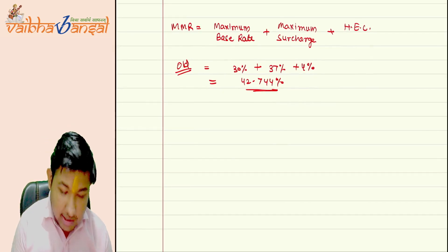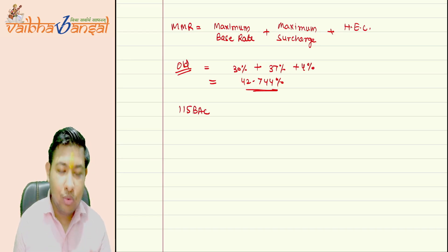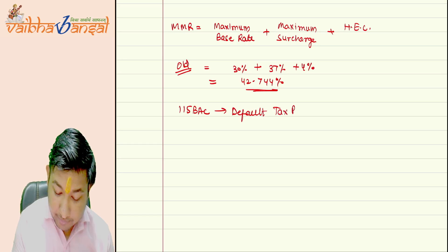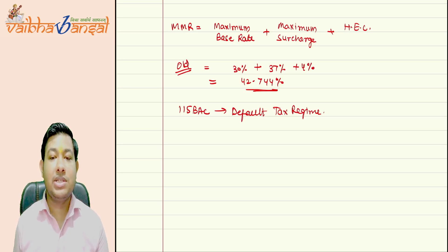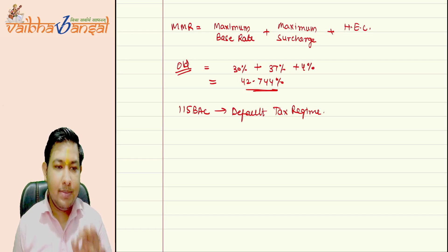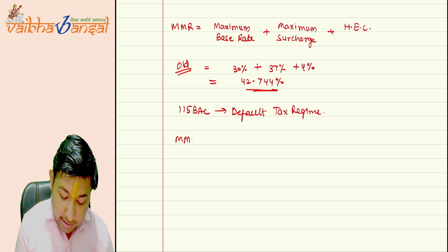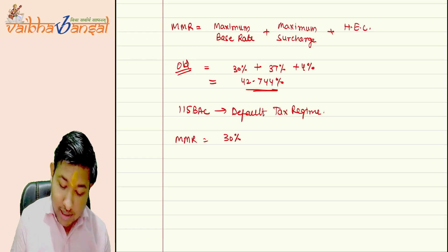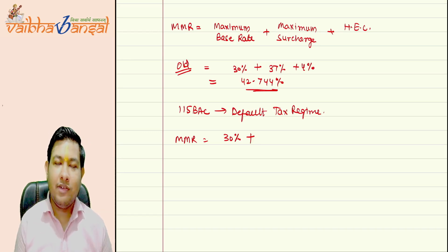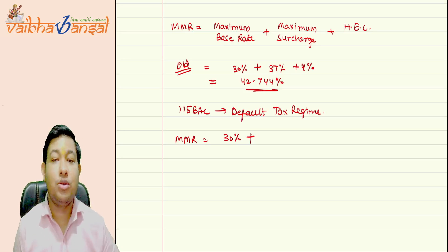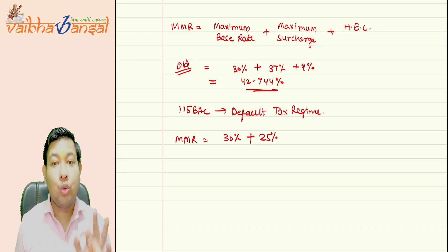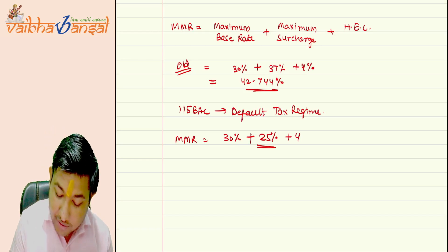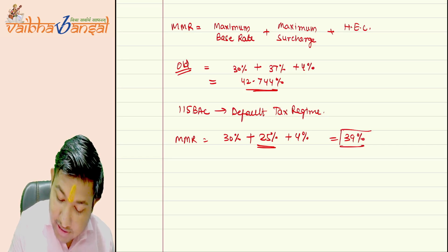So what is the current MMR? As you know, Section 115BAC — the new tax regime — has become the default tax regime. By becoming the default tax regime, the MMR is impacted. The maximum base rate is still 30% for income above 15 lakhs. However, under Section 115BAC, the maximum surcharge rate is only 25%, not 37%. Adding the evergreen 4% cess, the answer comes to 39%. This is your new MMR.